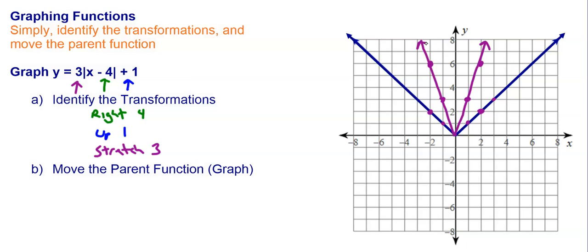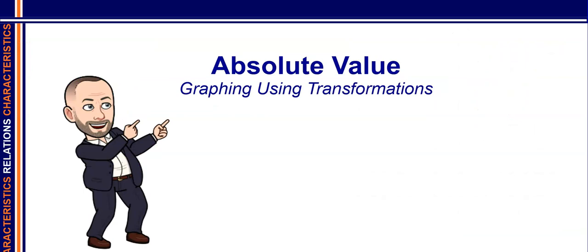Now I have to move it right 4 and up 1. So I'm going to go ahead and move it right 4 and up 1, and my new function is going to look like this. And that's all there is to graphing absolute values using transformations — identify the transformations first and then manipulate the graph accordingly.